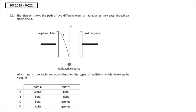This past paper question is from National 5, 2018, multiple choice question 22. The diagram shows the path of two different types of radiation as they pass through an electric field. Reading the table, we start with path Y — it is not attracted to any plates, so that is gamma radiation. Path X is attracted to the negative plate; positive particles are attracted to negatives, and the positive type of radiation is alpha. The correct answer is multiple choice answer D.